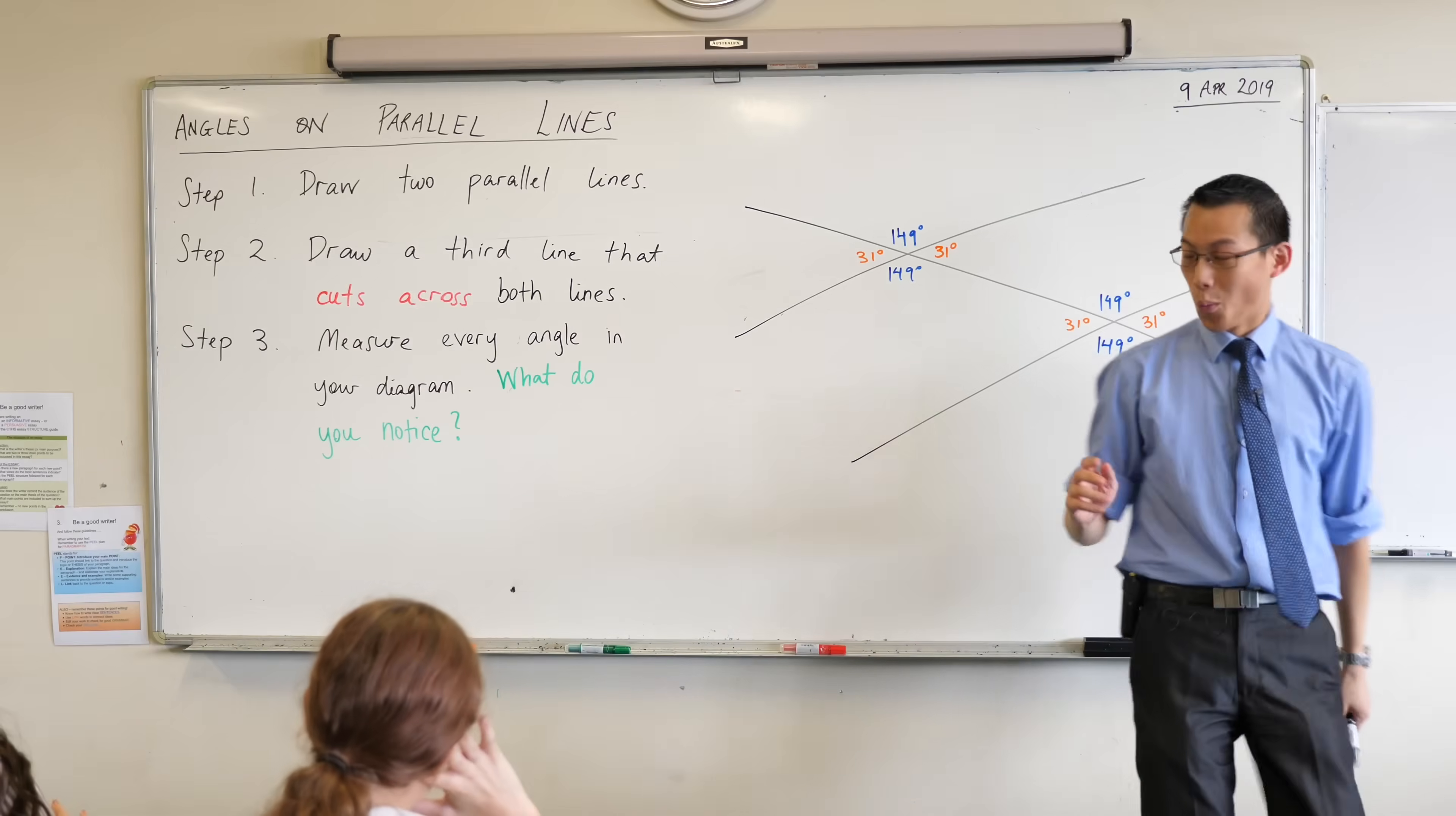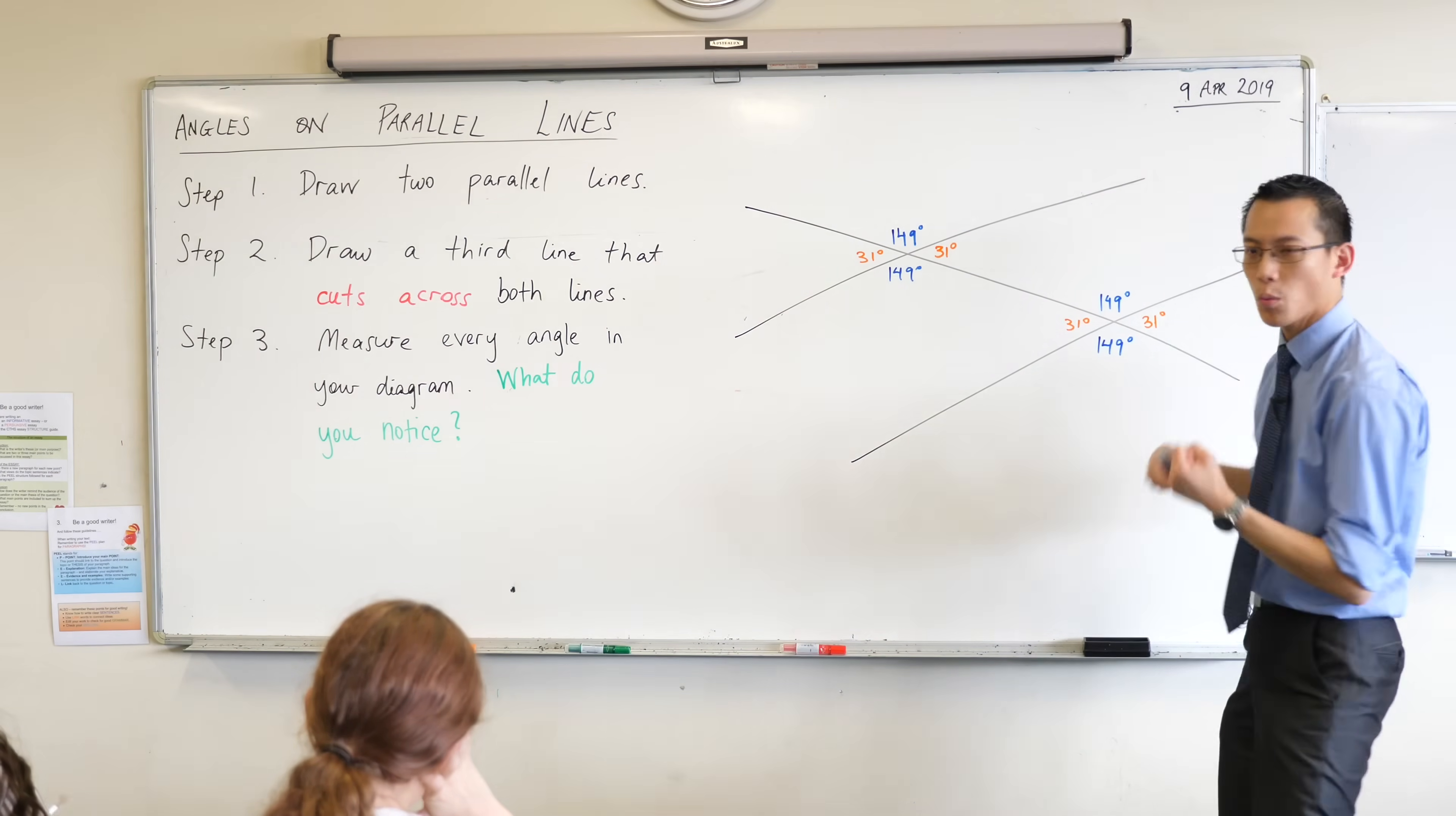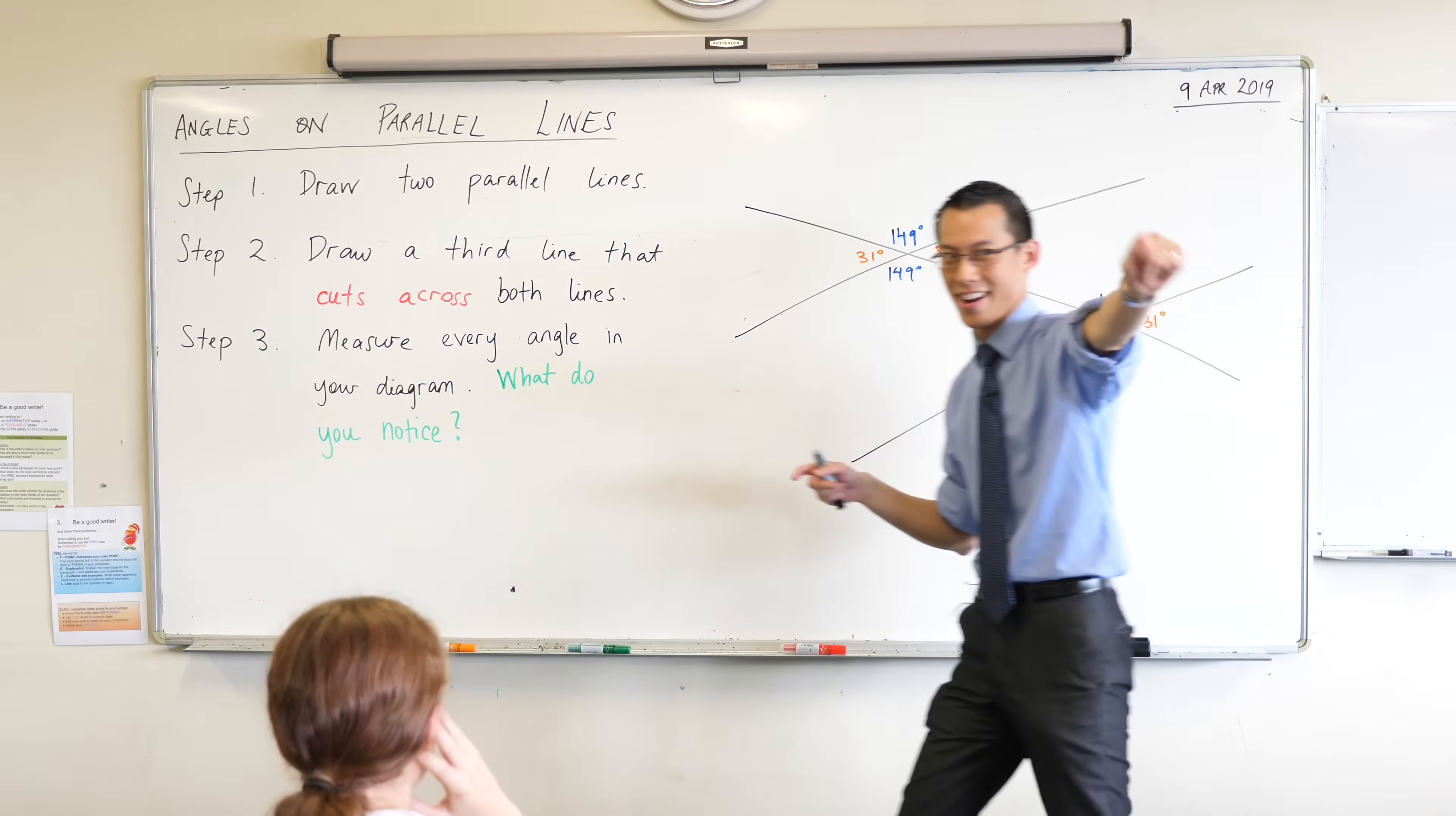But they'll probably look vaguely like this and we're going to point out a few things. So first question, we asked you to draw a couple of parallel lines. Does anyone know what's the way I show on the diagram the two lines are parallel? What do I indicate? Vishaka.